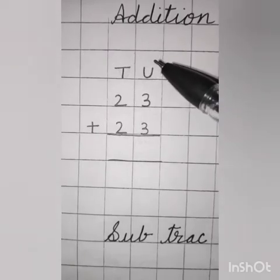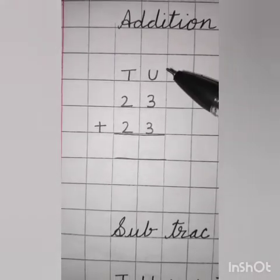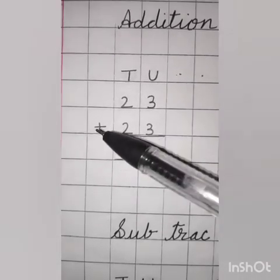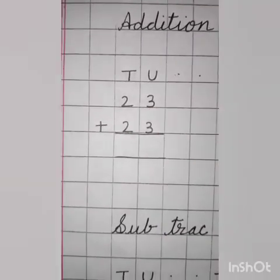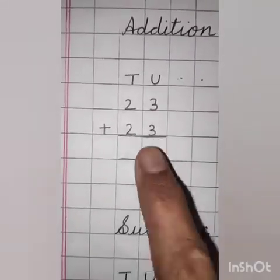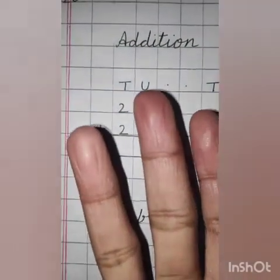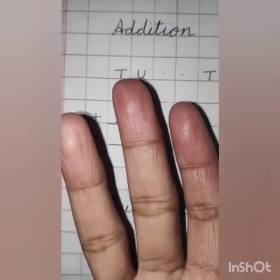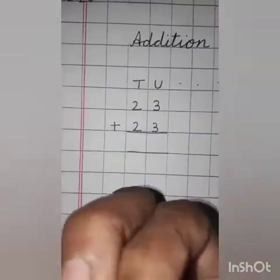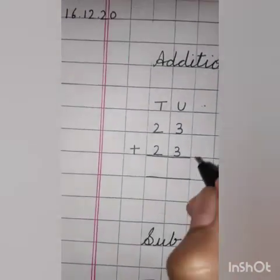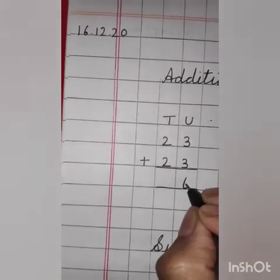Now, solve unit side. Three plus three. Three goes on head and three on fingers. What comes after three? Yes. Four, five, six. So, answer is six.